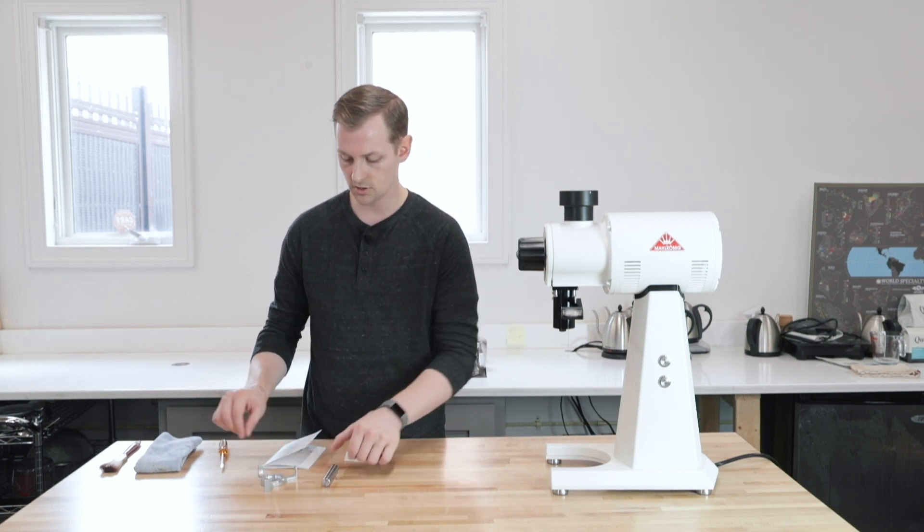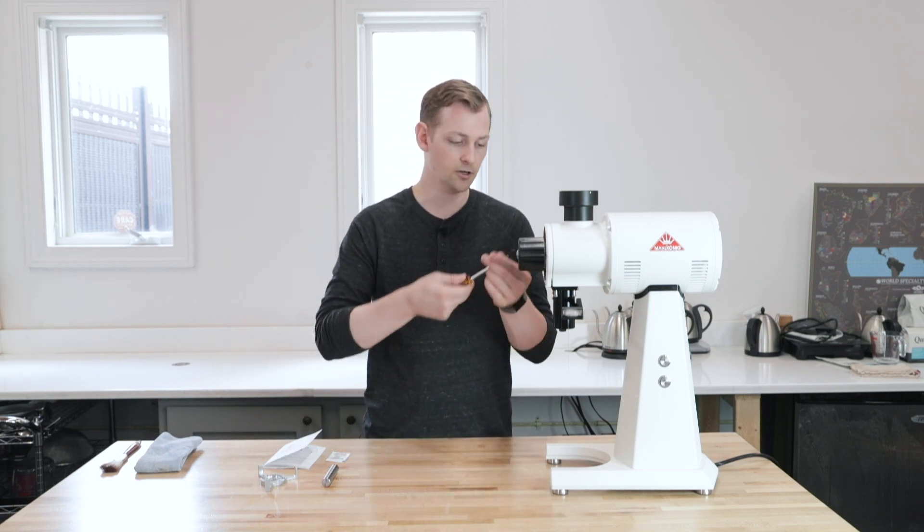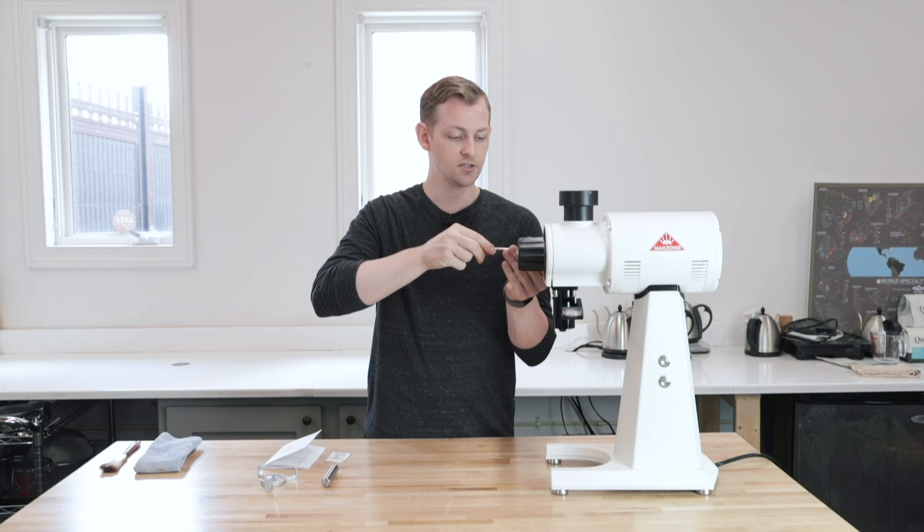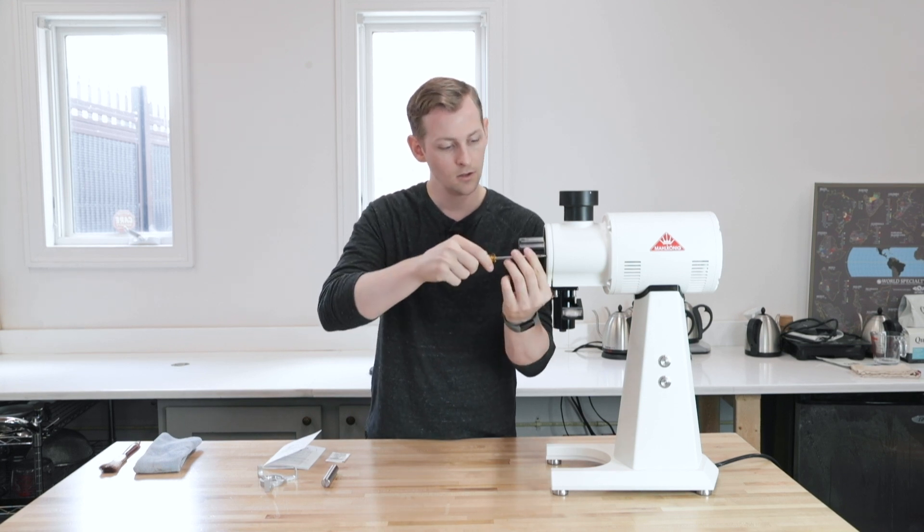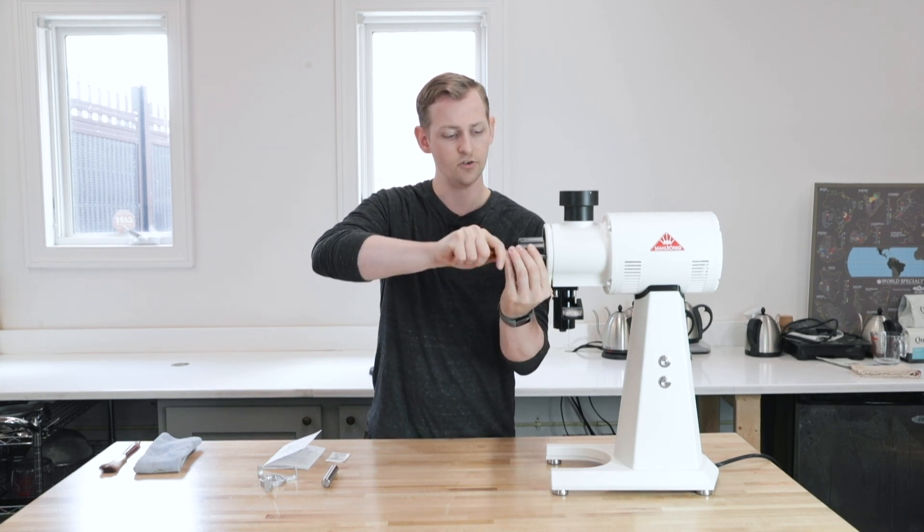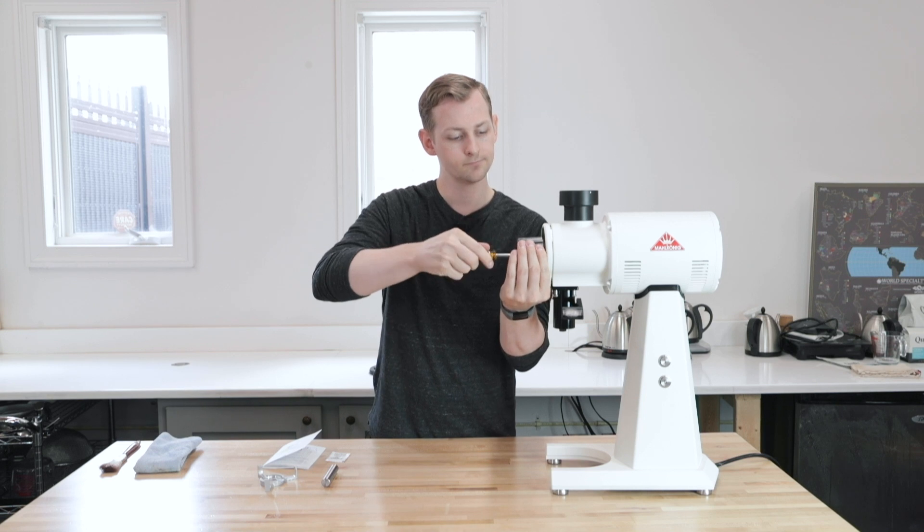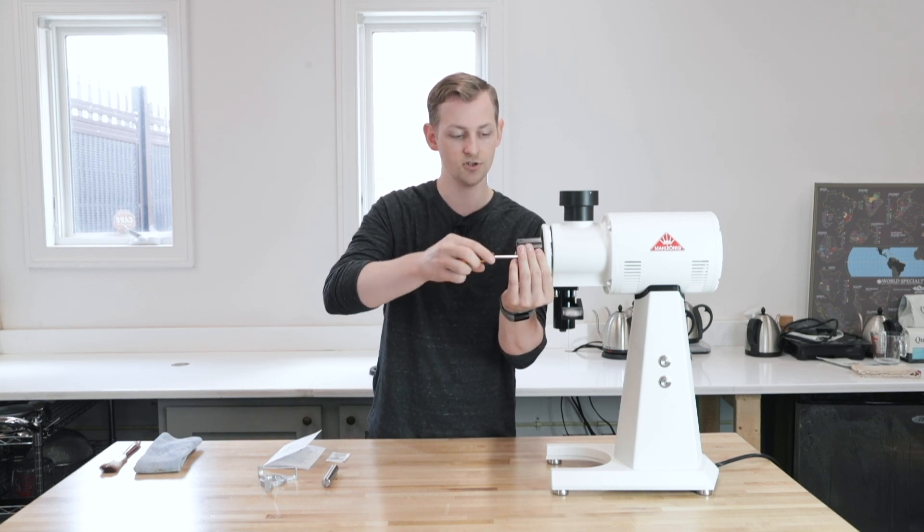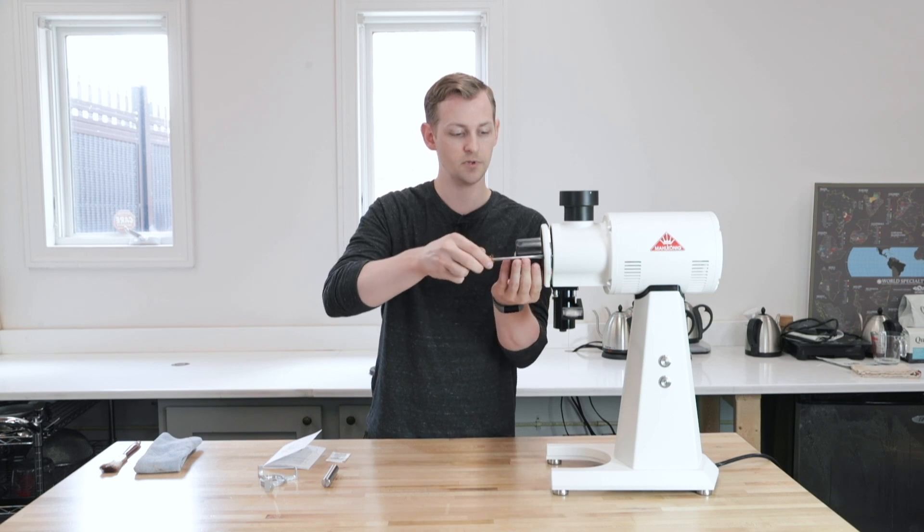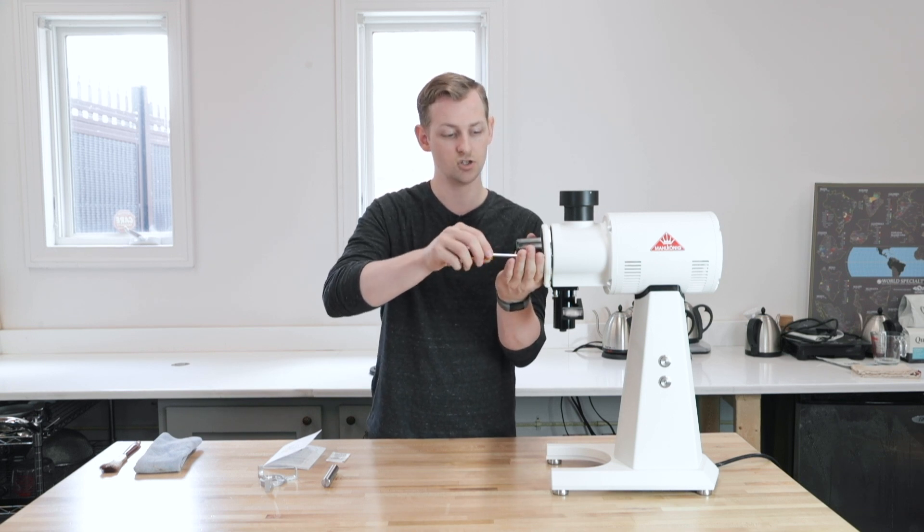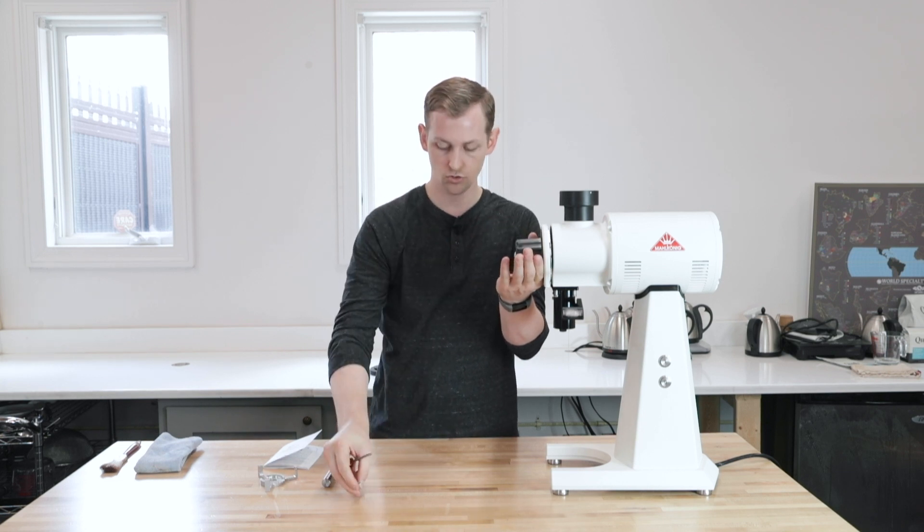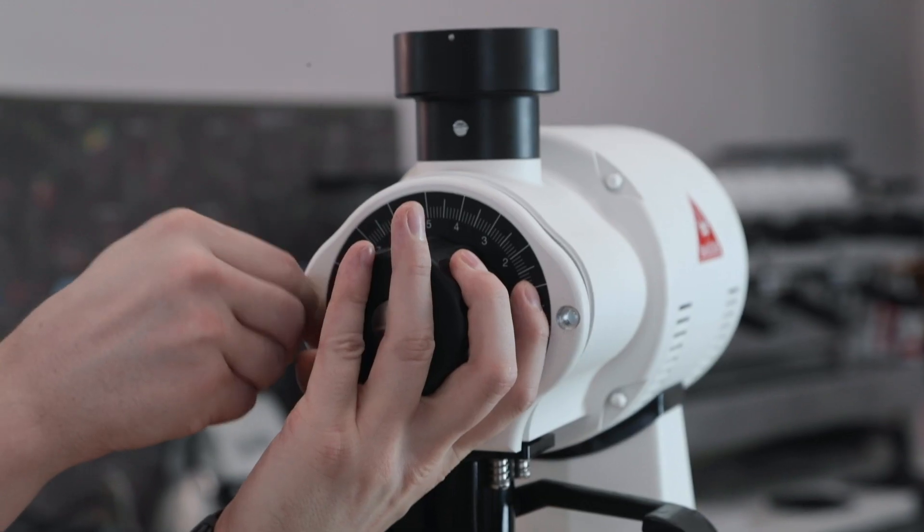So the first thing I'm going to do is I'm going to take off the faceplate of my grinder. I just need to loosen some slotted screws here. This is a pretty easy first step. And that just gets me access to the grind chamber and the burrs themselves. So this whole faceplate is going to come right off. I need to make sure that I'm holding it so it doesn't fall and break anything. But there's just two screws and they're pretty simple to take off.